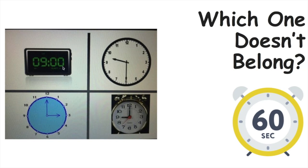Or maybe you thought that this one doesn't belong because on all of the other clocks the hour is nine o'clock. For example, this one shows nine o'clock. This clock shows the time 9:30, which means the hour is nine. And this one also shows nine o'clock, while this one shows three o'clock — so the three is the hour. There are a lot of things you may have noticed and a lot of options for which one doesn't belong.